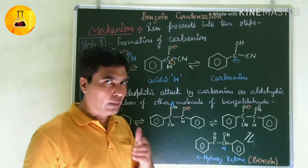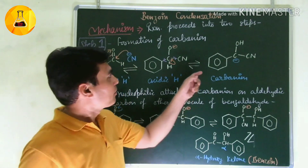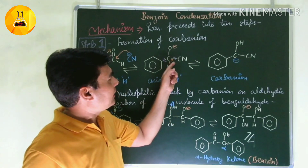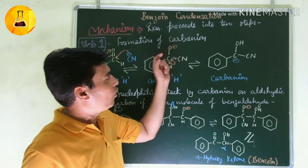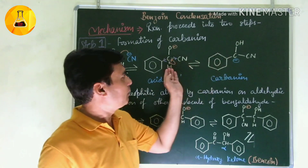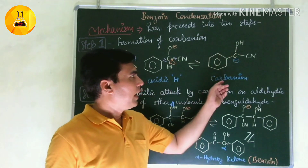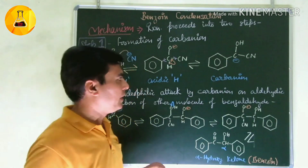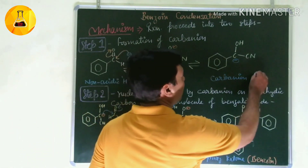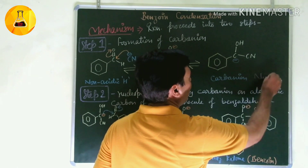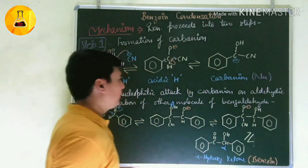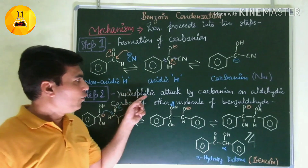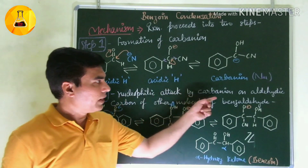After H+ is removed, a carbanion intermediate is formed. This is why KCN is crucial in this reaction. The O- picks up the H+ to form OH, and this carbanion intermediate is our nucleophile for the next step.